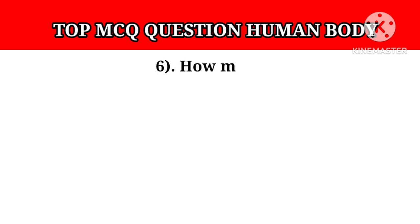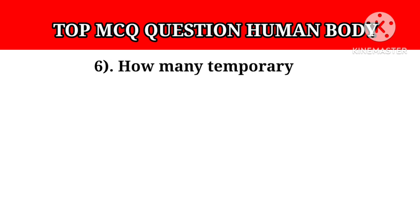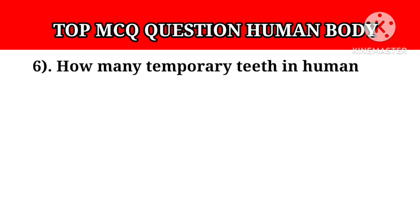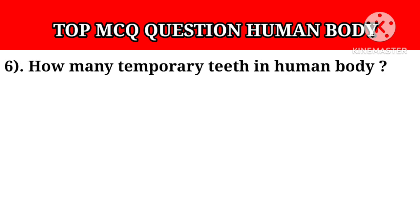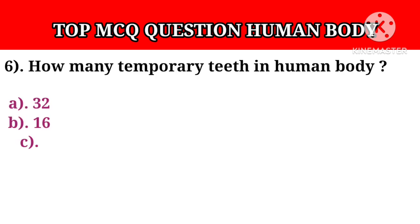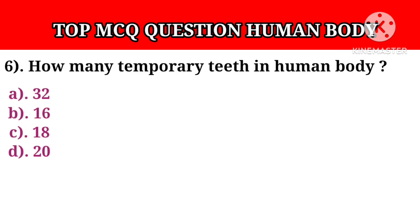Question number 6: How many temporary teeth are in the human body? Option A: 32. Option B: 16. Option C: 18. Option D: 20. Answer D: 20.